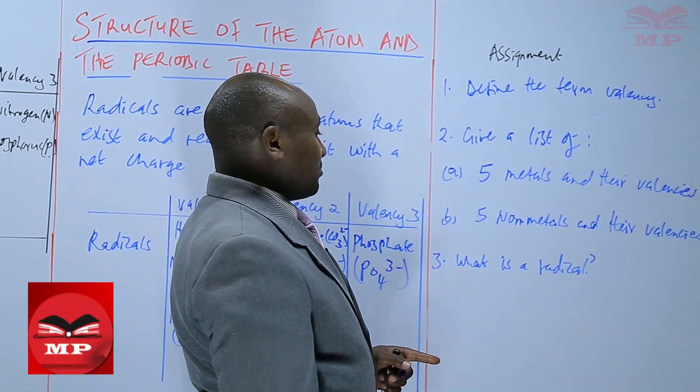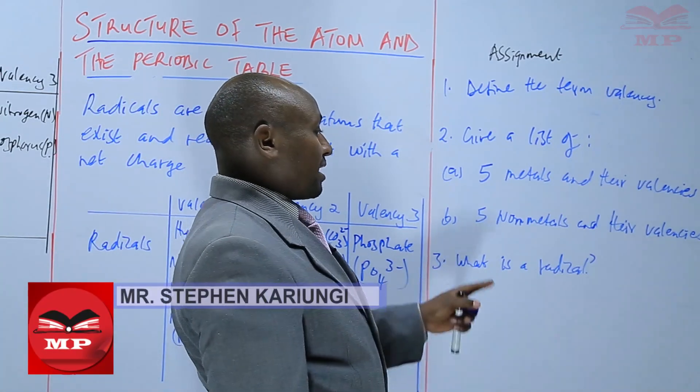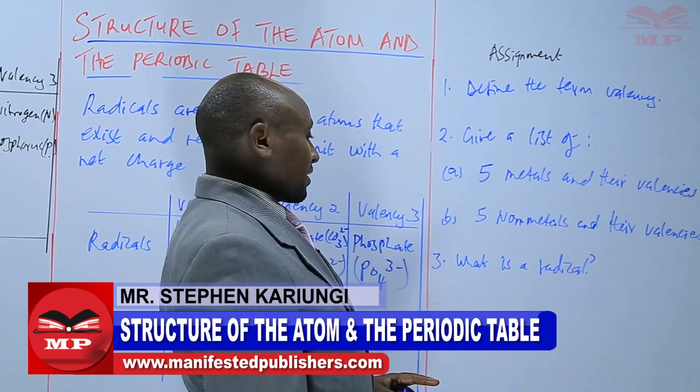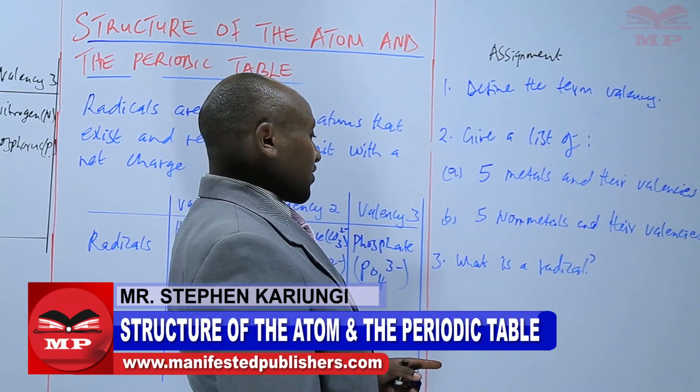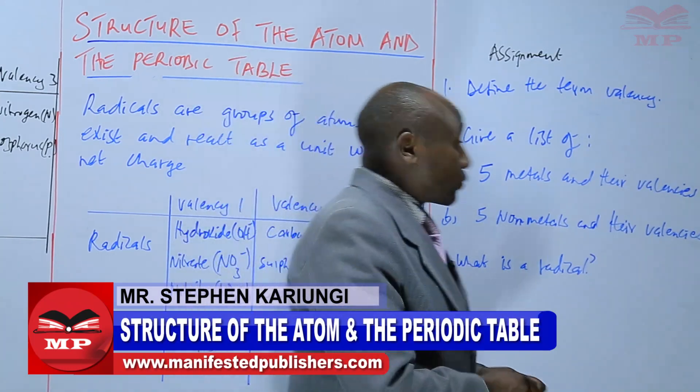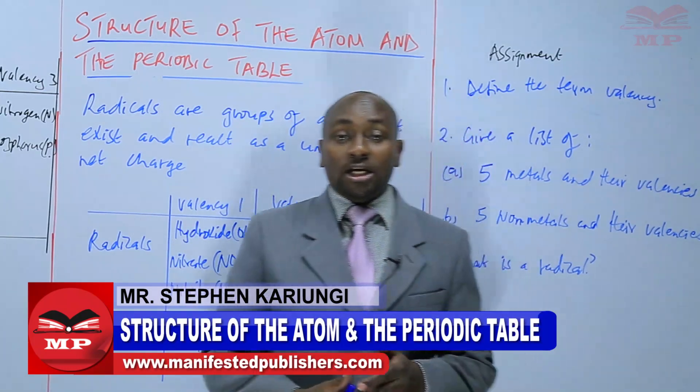Finish noting metals, non-metals, and their valencies, then number three: what is a radical? Complete that and we will continue from there. Goodbye.